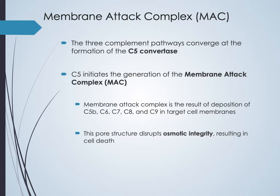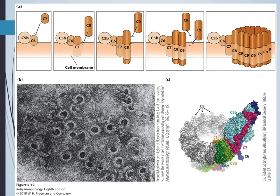The membrane attack complex creates a pore — a hole in the membrane — disrupting the cell's ability to regulate osmotic pressure, leading to cell death. Complement isn't happening just once; hundreds to thousands of MAC complexes form on a single cell, creating plaques on the membrane. This overwhelming number of pores is too much for the microbe to survive.